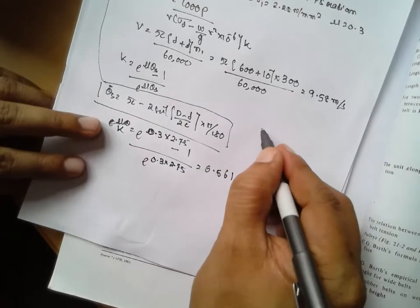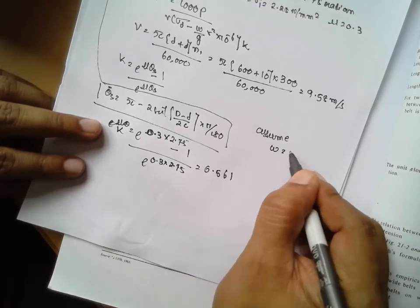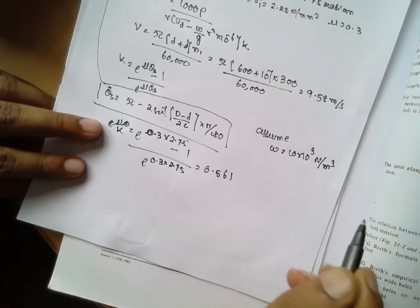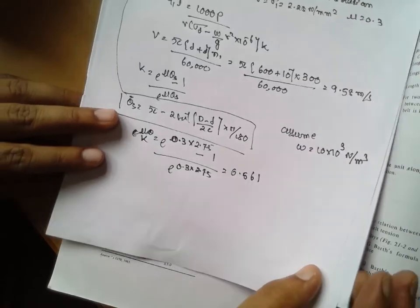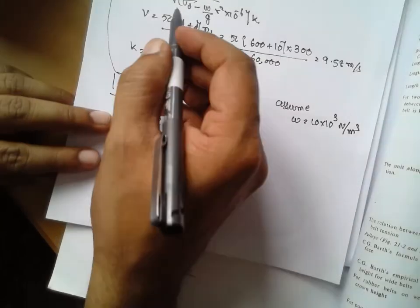Assume w is equal to 10 into 10 raised to 3 newton per meter cube. You have to assume it. It is for leather specific weight. Once you know this, substitute in above equation.